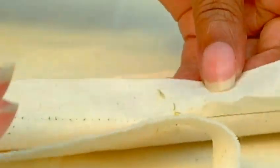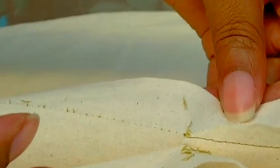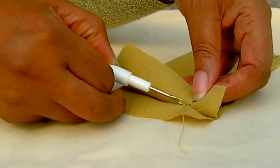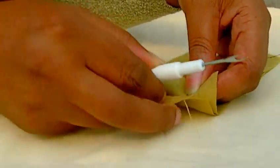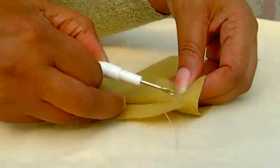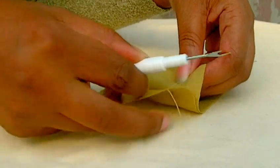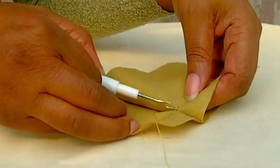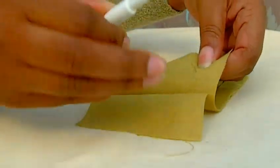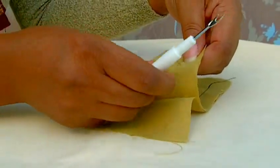This is how to use your stitch unpick. Find the stitching that you want to release, put it in and pull, and pull, and eventually get your job done. Then you just pull out the threads.